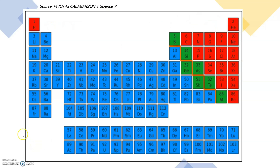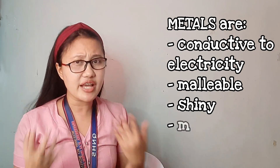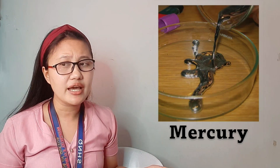The periodic table is arranged in ascending order: 1, 2, 3, 4, 5, 6, 7, 8, 9, 10, 11, and so on. Each element has its symbol and full name. Metals are typically found on the left side of the periodic table, and they are conductive to electricity, shiny, malleable, and sometimes magnetic. Examples of metals include aluminum, copper, gold, mercury, and lead.